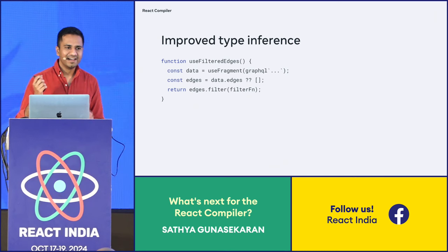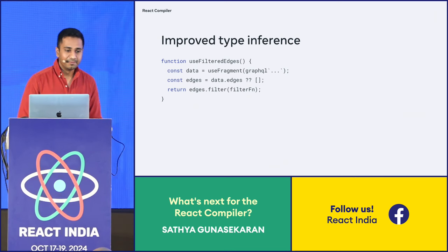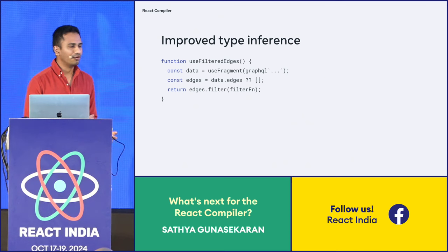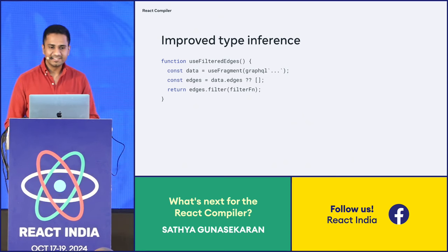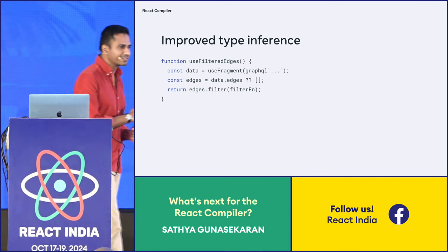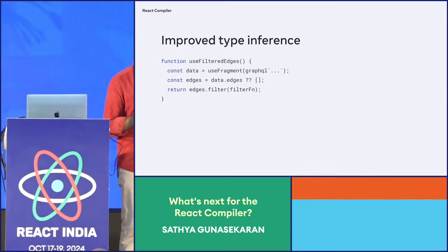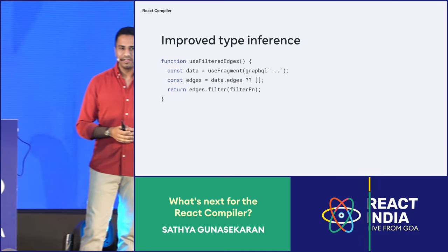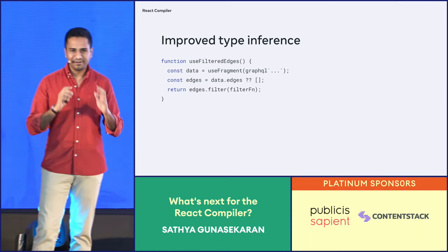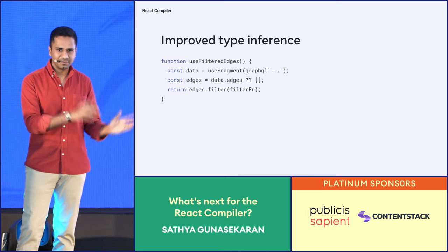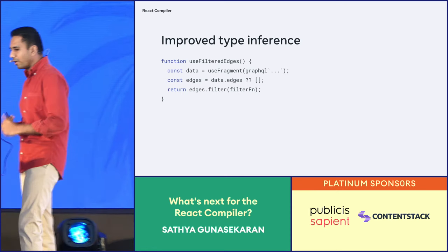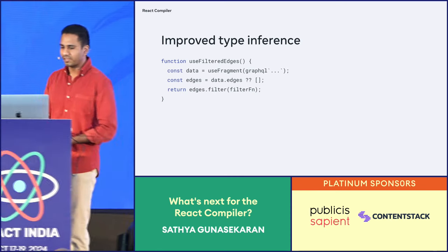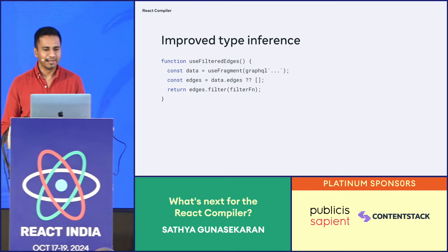The compiler has built-in type inference as well. The type inference helps us improve memoization. This is different from TypeScript types — we don't actually use TypeScript types. We want to support everyone, including people who don't use TypeScript, so we want the compiler to work with vanilla JavaScript as well.